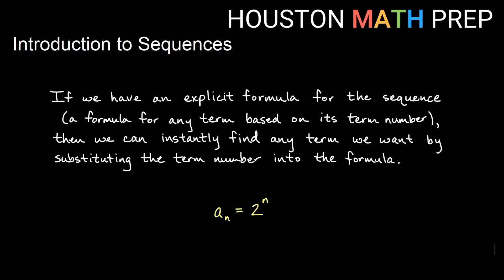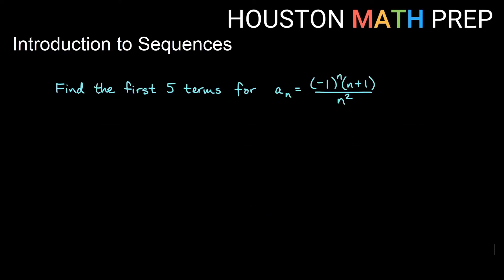If you have an explicit formula for the sequence, which is basically just a formula that involves its term number, then you can simply plug in any number you want to find any term you want. If you wanted to know the 12th term of the list, you could just plug in 12 for n and figure it out instantly without having to list all of the terms. You'll simply substitute whatever term number you want into the formula when you have an explicit formula and that will give you whatever term you need. We're going to do an example of this right now.